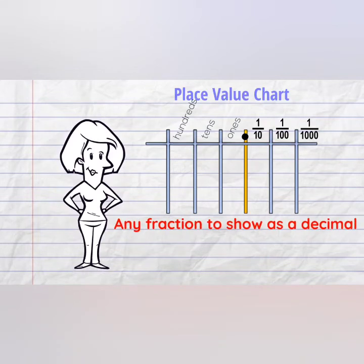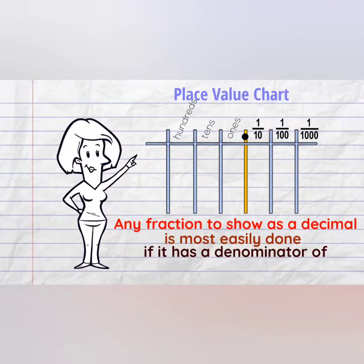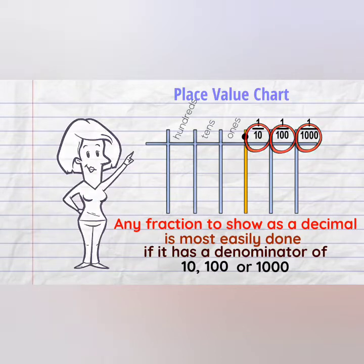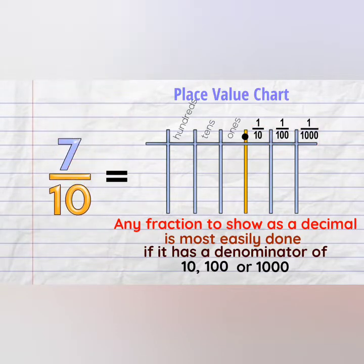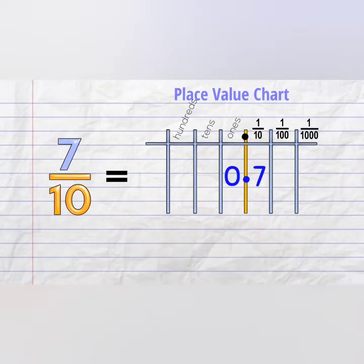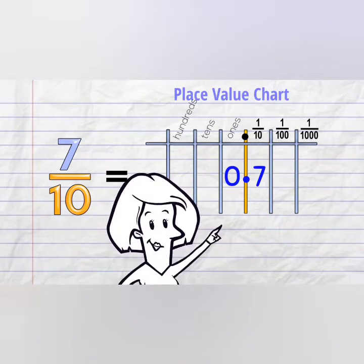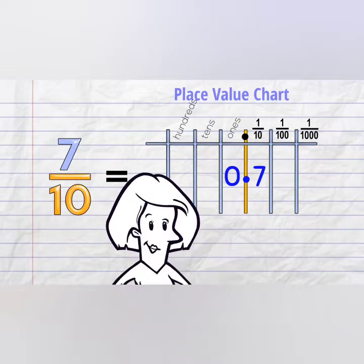Any fraction we have to show as a decimal is most easily done if it has a denominator of 10, 100, or 1000. So if we have 7 tenths, it has no whole ones, so we put a zero, decimal point, and the 7 goes in the tenths column because we've got 7 tenths. 7 tenths equals 0.7.